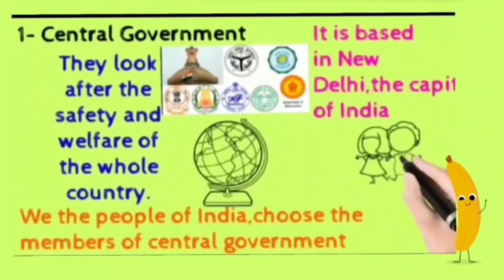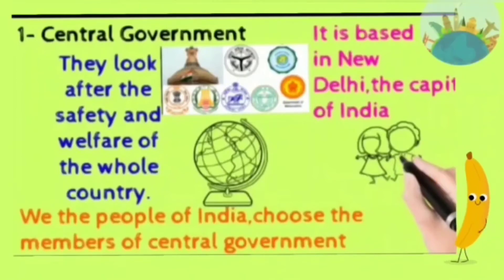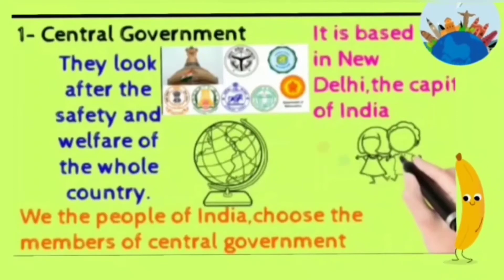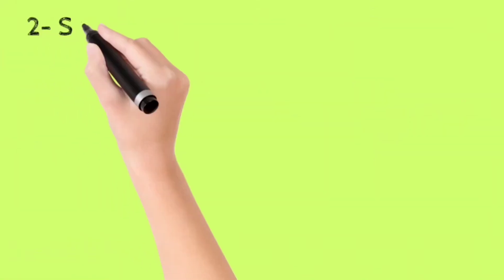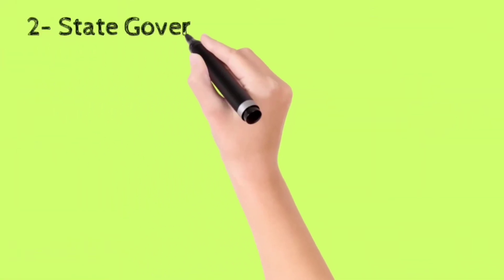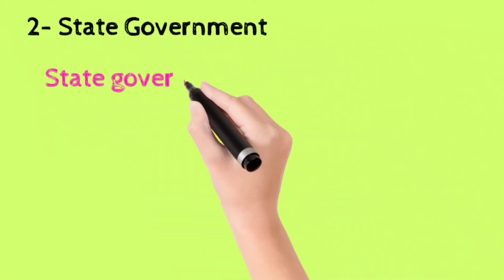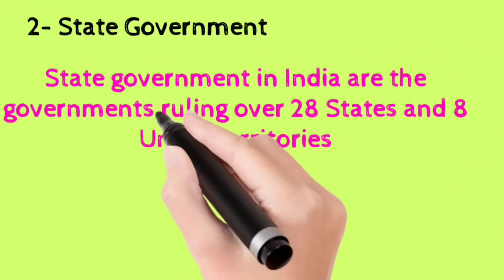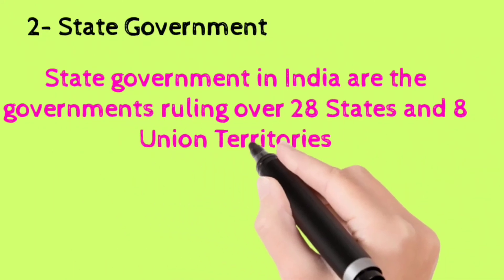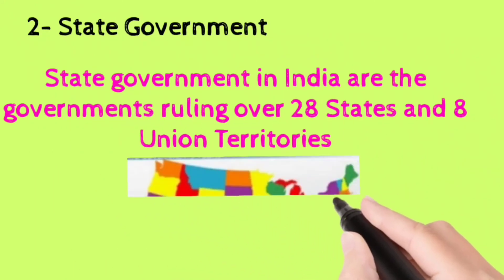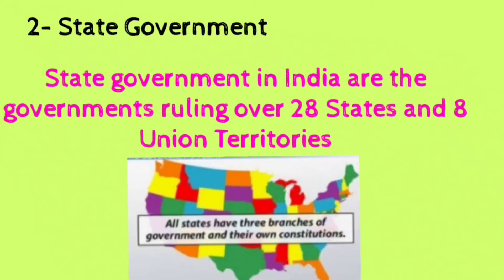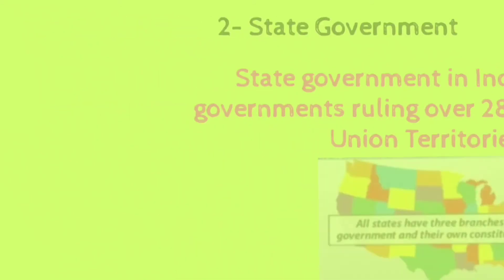The central government is based in New Delhi, the capital of India. We, the people of India, choose the members of the central government. The state governments in India are the governments ruling over 28 states and eight union territories.